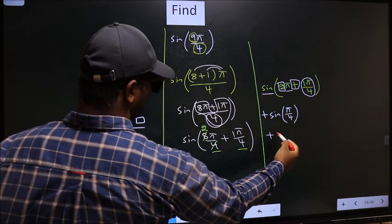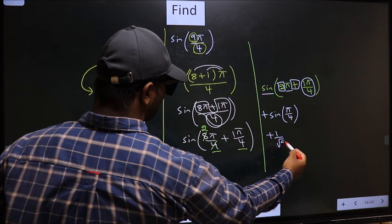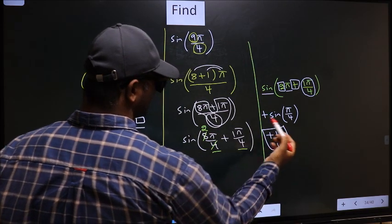So, plus sine π/4 is 1/√2. This is our answer.